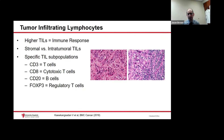Specific tumor-infiltrating lymphocyte or TIL subpopulations have been studied, measured by a procedure called immunohistochemistry. Pathologists can look at different types of TILs: T cells marked by CD3, cytotoxic T cells marked by CD8 — the T cells most involved in killing the cancer — B cells marked by CD20, and regulatory T cells marked by FOXP3, which put the brakes on other T cells. The hypothesis is that CD3, CD8, and CD20 would be higher in patients responding to immunotherapy, while lower FOXP3 levels would be found in patients more likely to respond. However, more work needs to be done to confirm this.